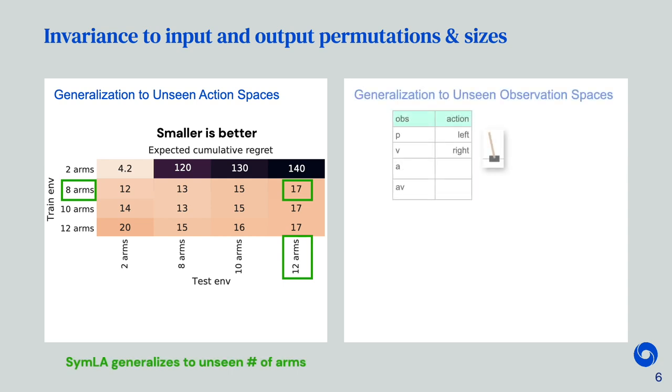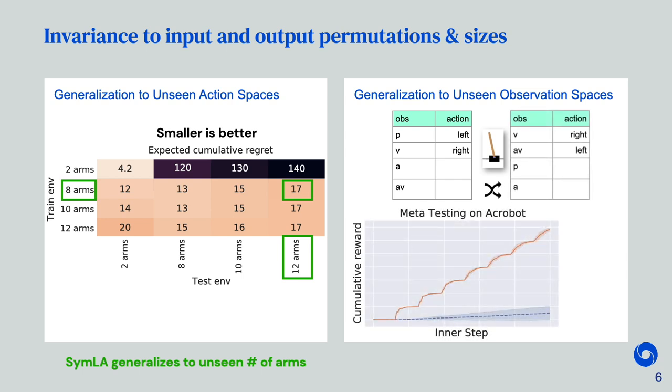We can also modify the observation space. Given an environment such as CartPole, we shuffle both the observations and actions at meta-test time. When running SymLA on the shuffled environment, we observe that it does well compared to the meta-RNN. This is because SymLA is invariant to permutations.